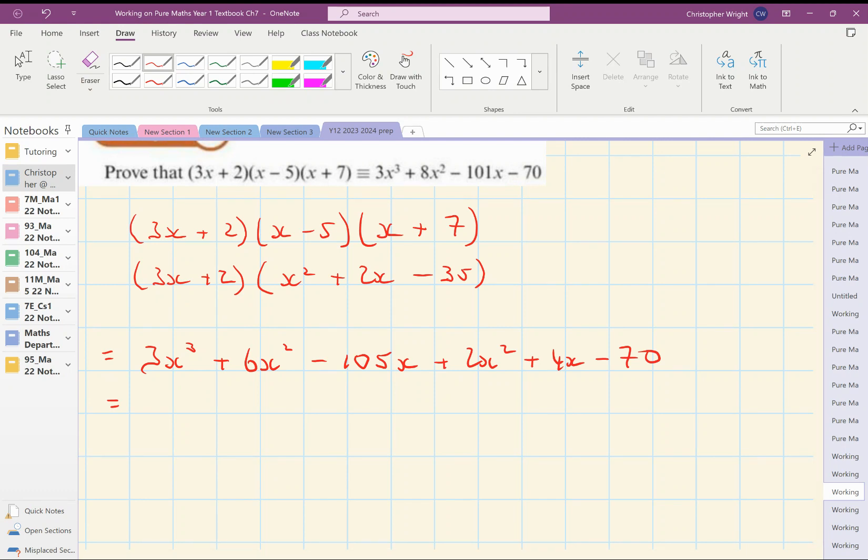3x cubed, no more x cubed, so that's 3x cubed. Plus 6x squared plus 2x squared is plus 8x squared.